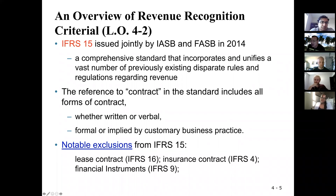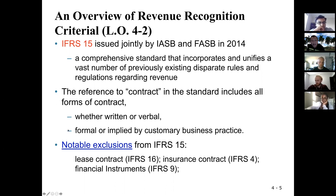However, leasing contracts are excluded — they have a different standard, IFRS 16, to deal with lease contracts. So when a company leases a vehicle or a building, those contracts are not subject to IFRS 15; they're dealt with by IFRS 16. Insurance contracts fall under IFRS 4, and financial instruments fall under IFRS 9. Make sure that not all contracts are subject to IFRS 15.